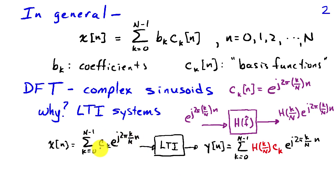So the coefficients of the input signal were ck, and then the coefficients of the output signal associated with frequency k over n are h of k over n times ck. So the action of the system is one of multiplication on these coefficients that we use to represent the signal.